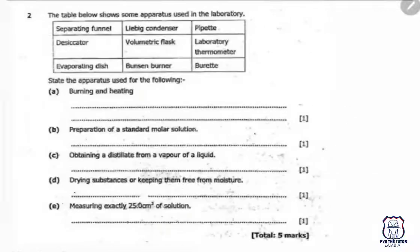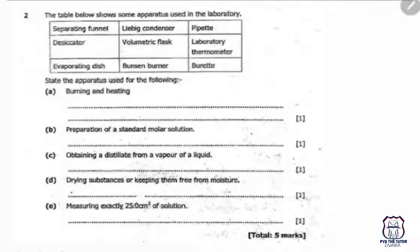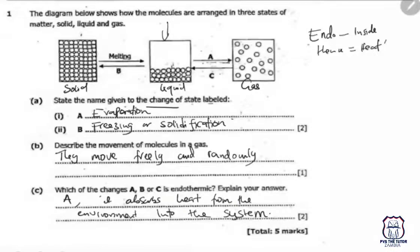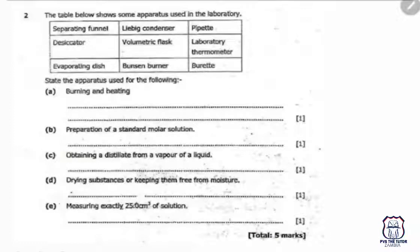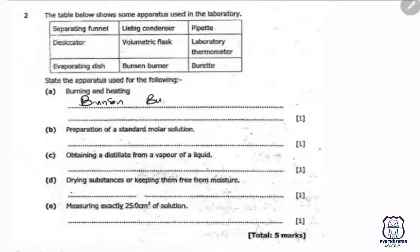The next question shows a table of apparatus used in the laboratory, including a separating funnel, lab condenser, pipette, desiccator, volumetric flask, laboratory thermometer, evaporating dish, Bunsen burner, and more. The question asks to state the process or apparatus used for each task. For burning and heating, use a Bunsen burner.